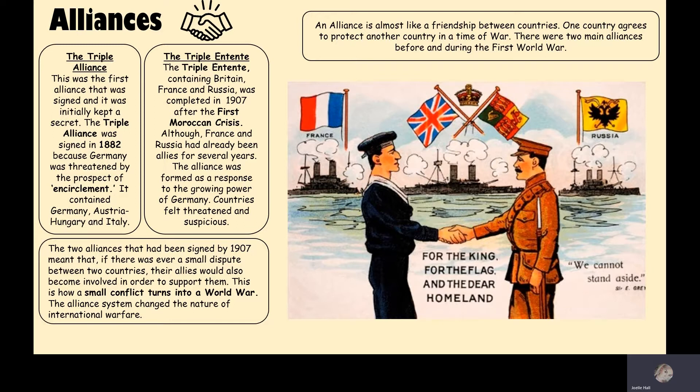By 1907, two alliances had been signed and Europe was literally split into two sides — it was almost like a bomb waiting to go off. It also meant that if there was a small dispute between two countries, their allies would become involved to support them. This is what we see with Austria-Hungary and Serbia — a war that really should have been between just two countries turned into the First World War because of the alliance system. This changed the nature of international warfare forever — this is why it's called the First World War, because it's the first to involve most of the big global powers. A source there depicts the signing of the Triple Entente.